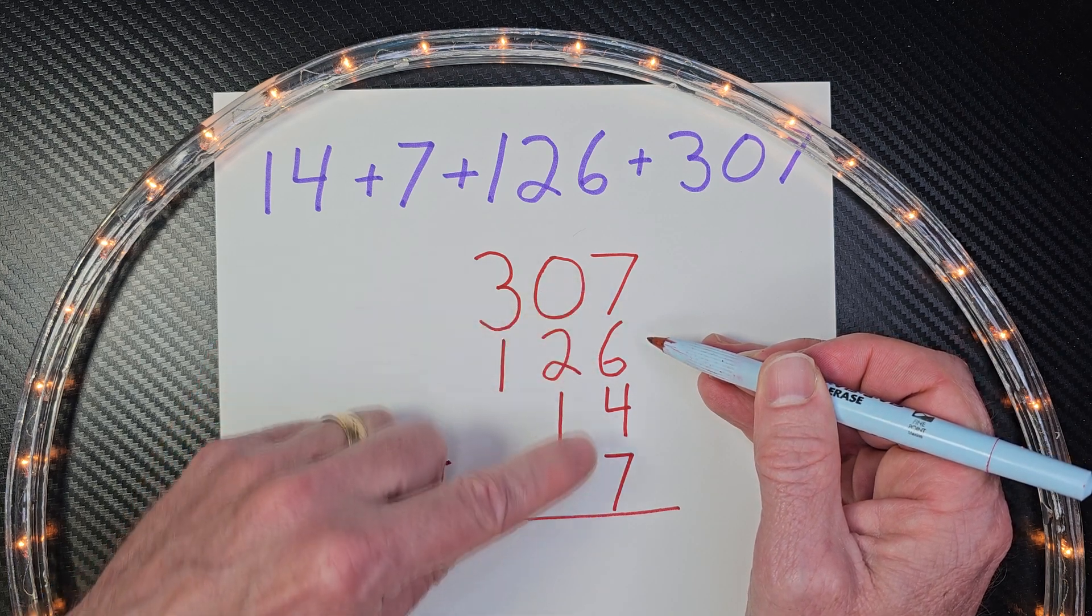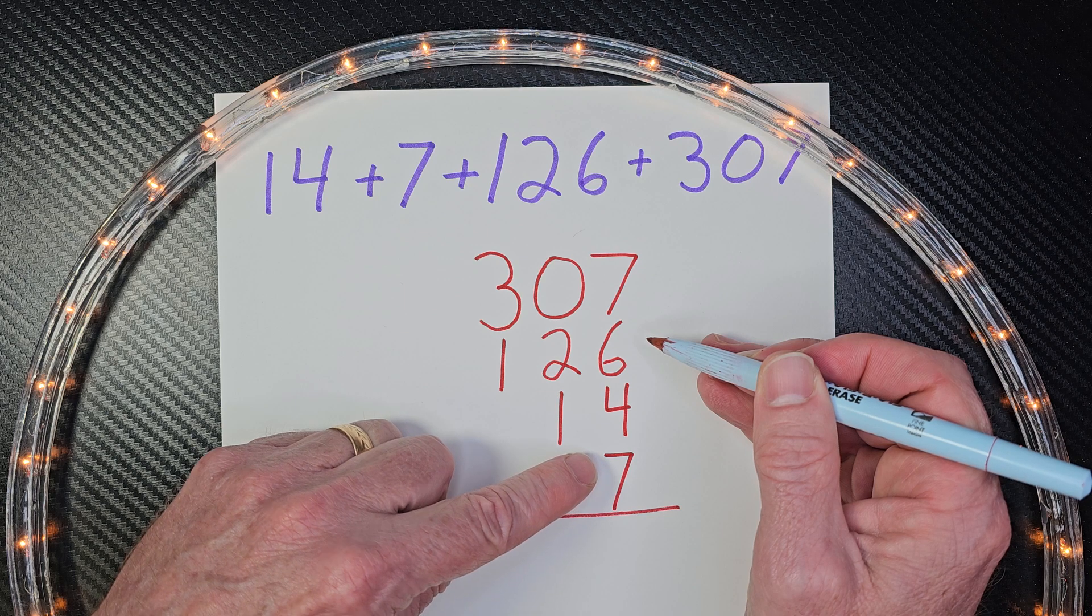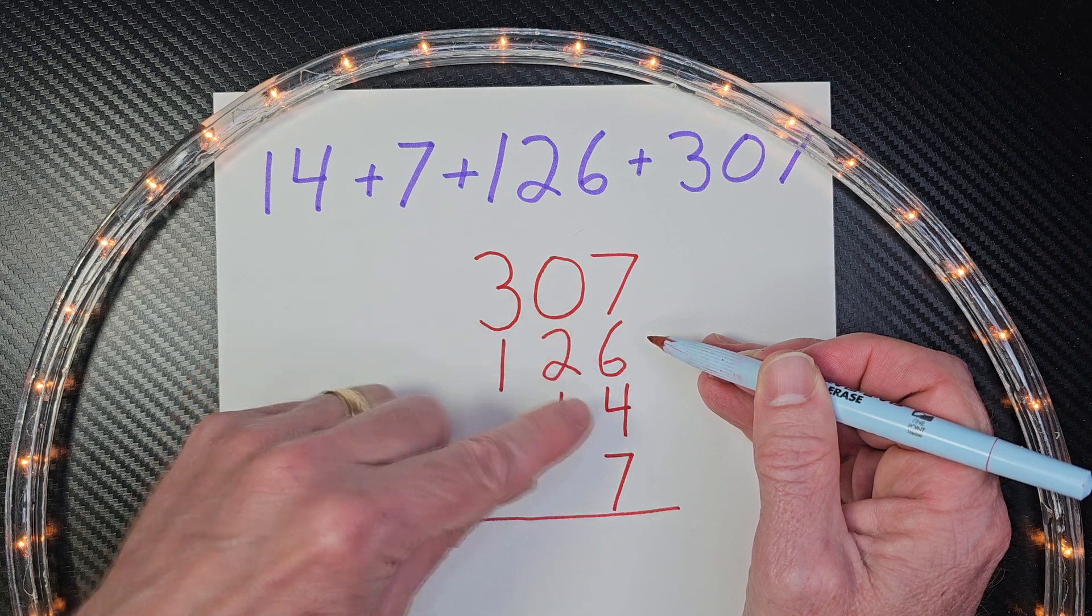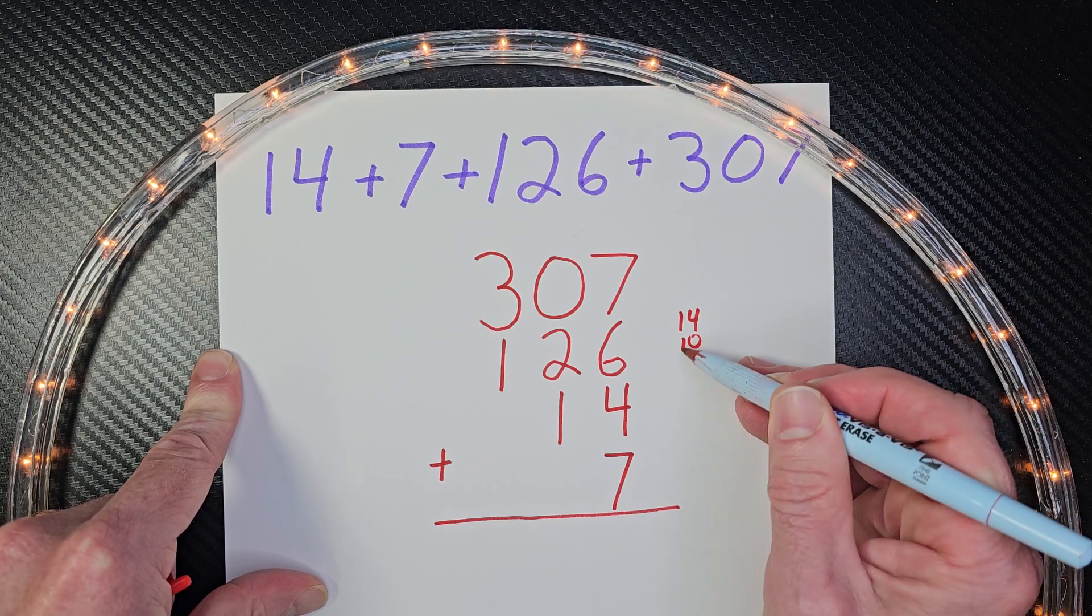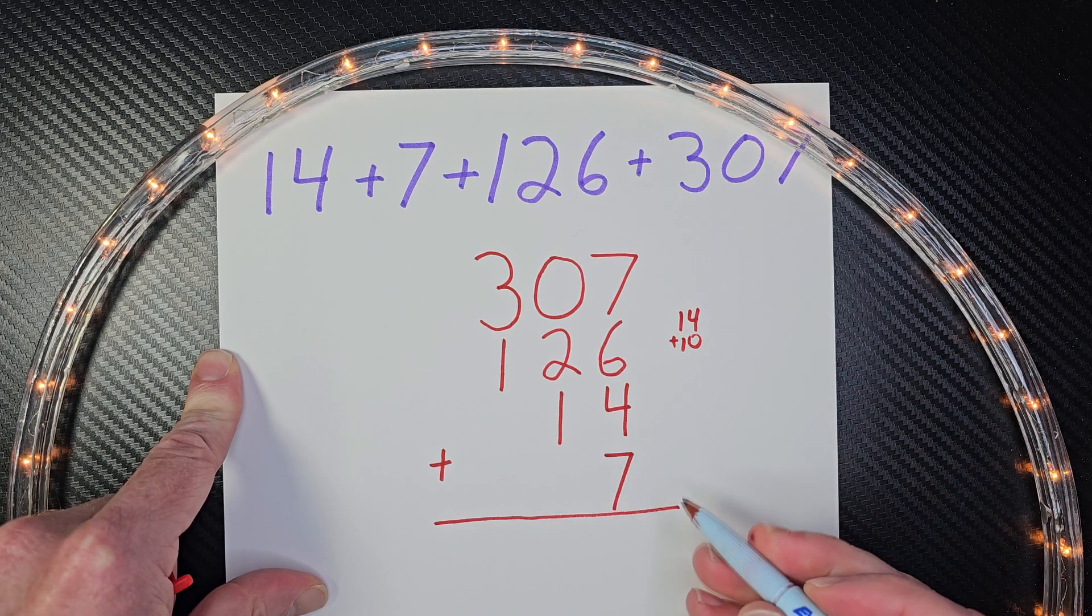I notice that 6 plus 4 is 10. And I also notice that 7 and 7 is 14. So, if you can add 14 and 10 in your mind, that is awesome. Otherwise, you can just put those numbers right there. So, that would be 24.